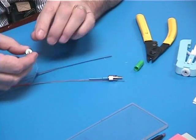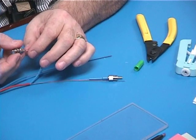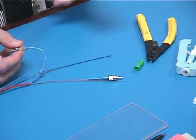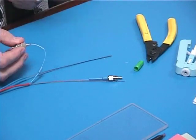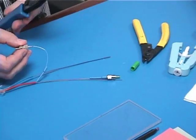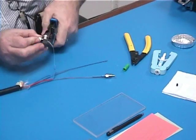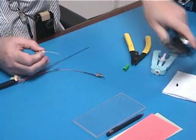And now you're ready to crimp. You got your fiber coming through. So you take your crimping tool and you take the 250 micron location there, and go ahead and crimp.